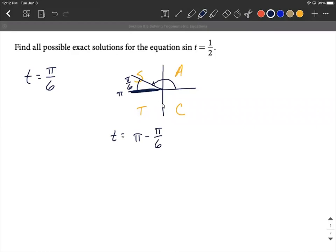So to do so, I want to get a common denominator. I'm going to write pi or one pi as six pi over six minus the pi over six that we already had.